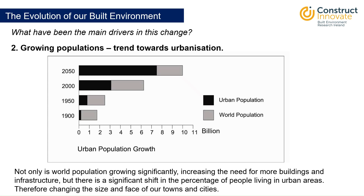Looking at the graph, the dark part represents the urban population and the gray part represents the rural population. In the 1900s, most people lived outside urban centers. By around the turn of the century, it was about half and half. Now it's more like 60% urban and 40% rural. By 2050, it's expected that about three quarters or more of people will live in urban areas. With potentially 10 billion people on the planet by 2050, there's an increasing need for more buildings and infrastructure due to the significant shift toward urban living.